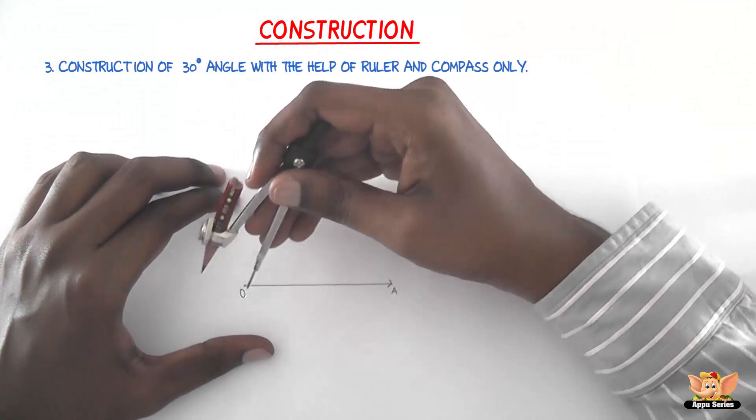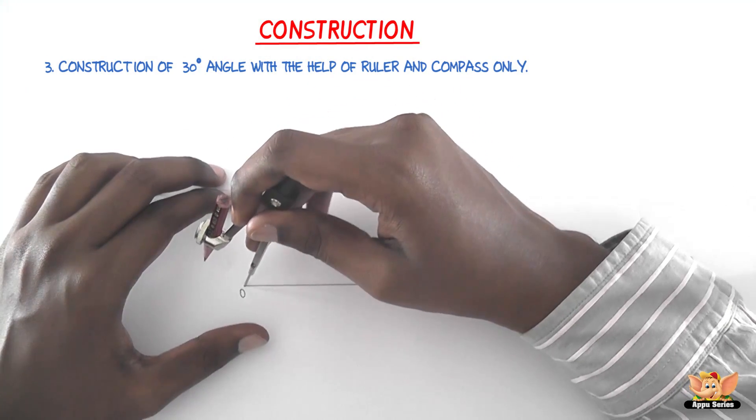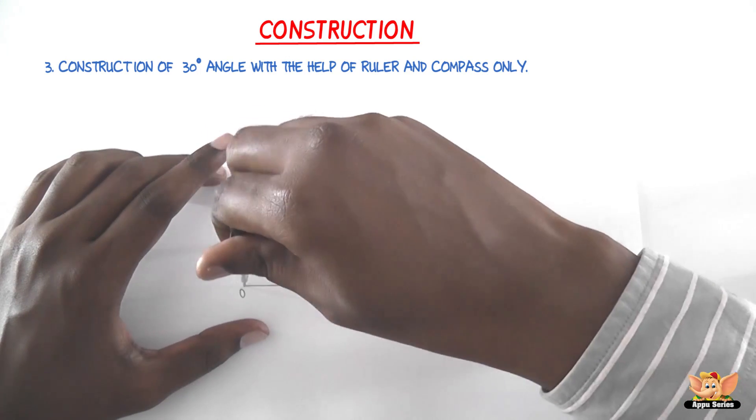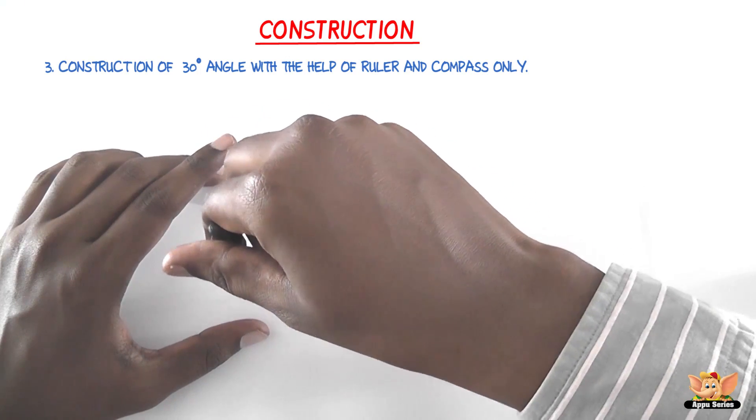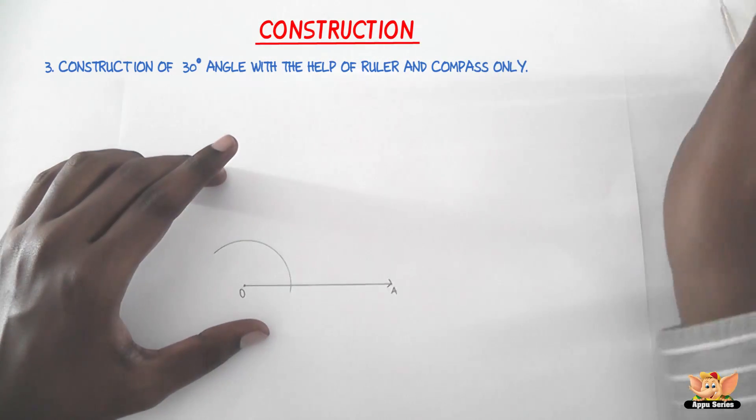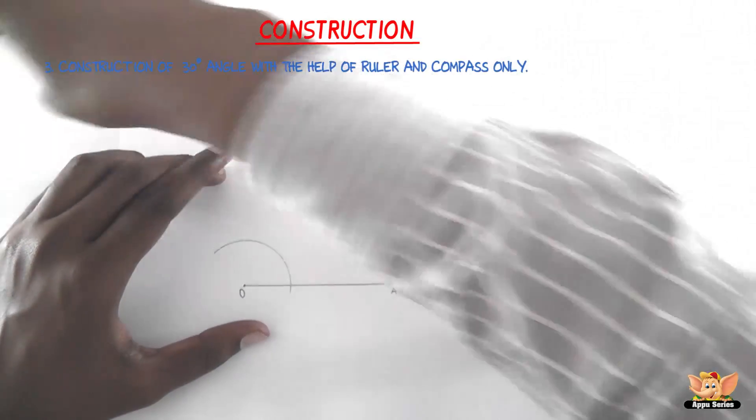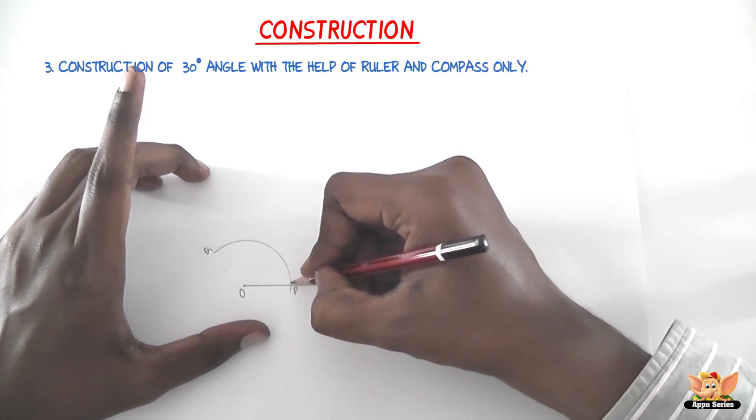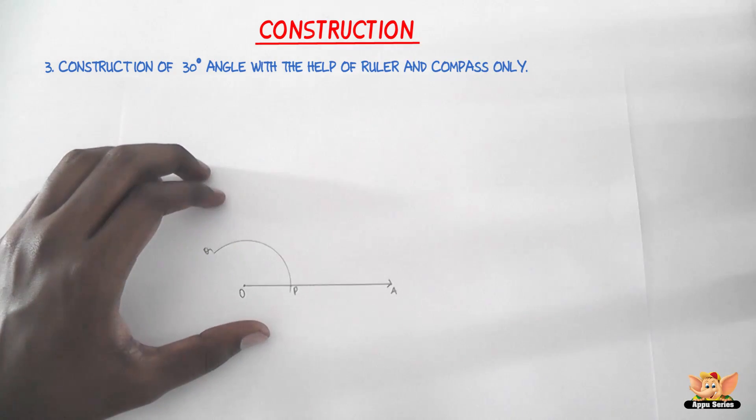The second step is with O as center and any convenient radius, draw an arc PQ such that it intersects the line OA. This is the arc PQ and it intersects the ray OA at P.